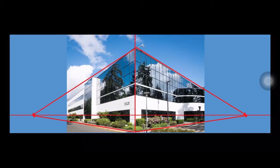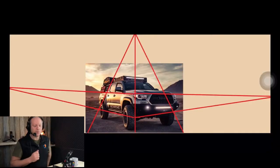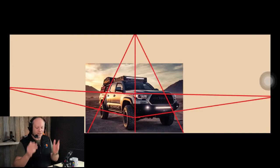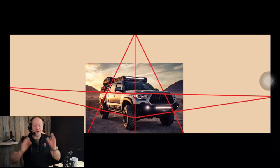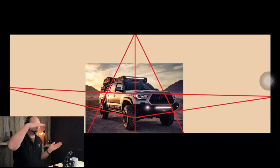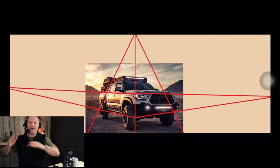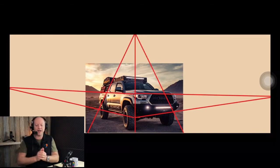Another example is for cars. So with cars, get down nice and low. Not only can you have those two perspectives going off to the side, shooting from the front corner of the car.